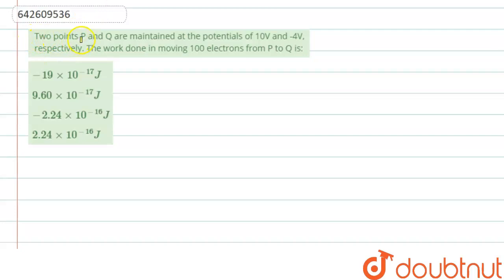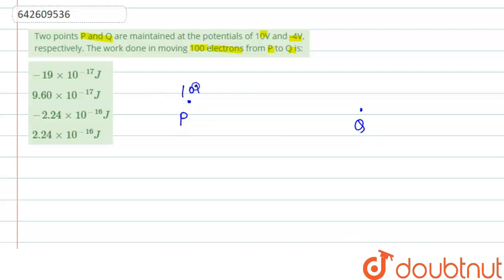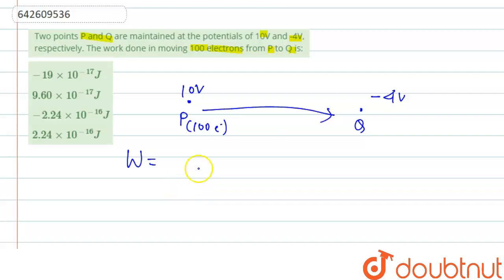The question says that two points P and Q are maintained at potential 10 volt and minus 4 volt respectively. We have to find the work done in moving 100 electrons from P to Q. So let's say this is point P at 10 volt and this is point Q at minus 4 volt.